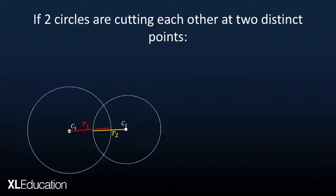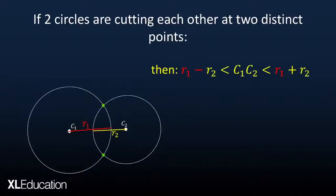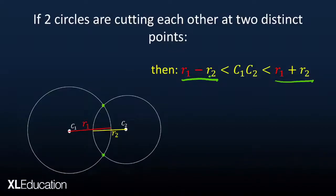The next scenario is when two circles are cutting each other at two distinct points. The bigger circle has center C1 and the smaller one has center C2. The condition is: the difference of the two radii (radius 1 minus radius 2) must be less than the distance between center 1 and center 2, which must also be less than the sum of radius 1 plus radius 2.